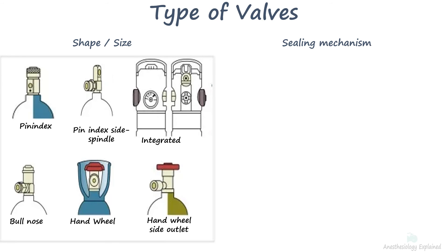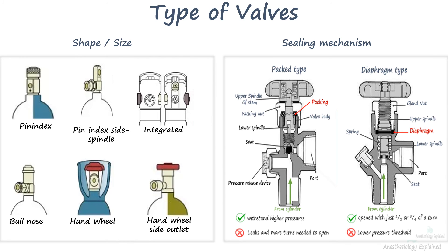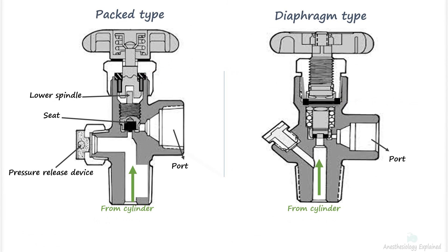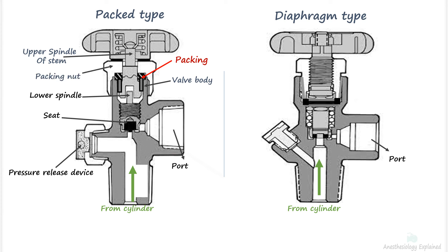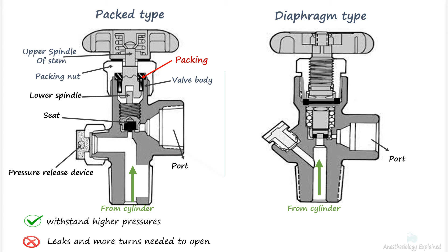Integrated valves have built-in regulators. Based on the sealing mechanism, valves are either packed or diaphragm type. In a packed valve, the stem is sealed by resilient packing such as Teflon. These valves utilize compressed packing to create a seal around the valve spindle and body, and the packing nut is tightened to compress the packing against the spindle. The primary advantage of a packed valve is its ability to withstand higher pressures; however, over time the packing may wear out and begin to leak, and these valves typically require 2 or 3 turns to fully open.